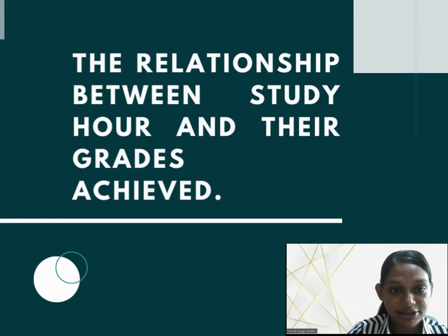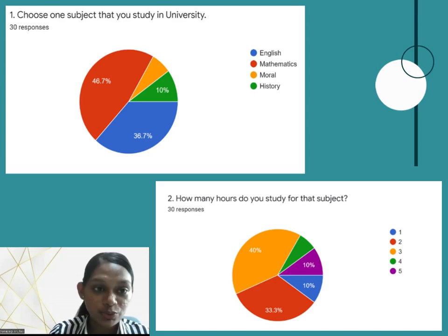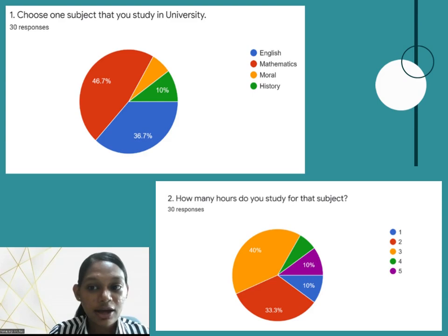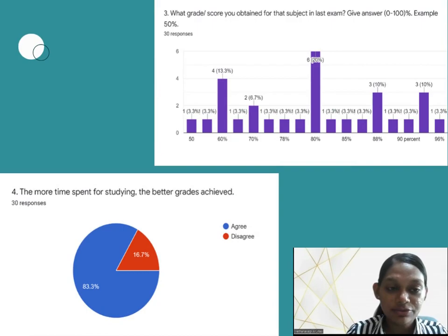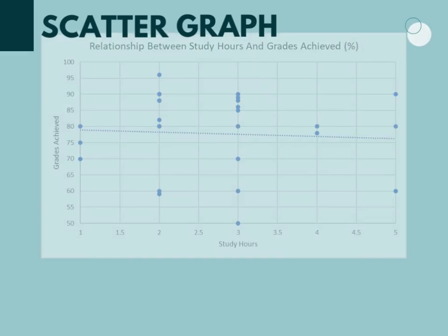The first relationship is between study hours and grades achieved. From a Google Form, we asked four questions. One: choose one subject that you study in university — the highest percentage is mathematics. Two: how many hours do you study — mostly three hours. Three: what grade do you achieve for that subject — the highest is 80%. Four: the more time spent for studying, the better grades achieved — most of the students agree with this statement.